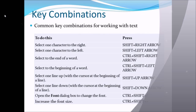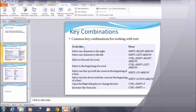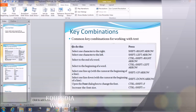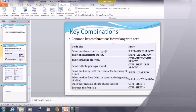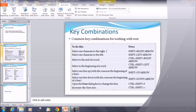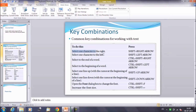Now we will be discussing the key combinations and how we can work faster with their help. The first example is selecting one character to the right. Place your cursor where you want to start the selection, then keep the Shift key pressed and keep pressing the right arrow key. It will select character by character.